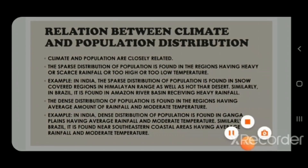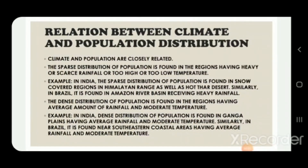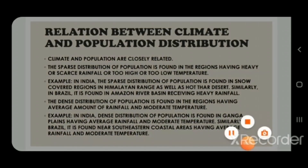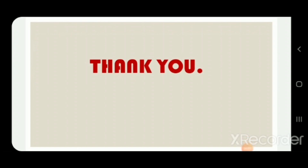When we correlate climate and population distribution, we understand that if the climate is too extreme, the population is very less because not everyone can bear such conditions. Conversely, if climatic conditions are favorable, the population is dense, making it easier for people to live there. With this I would like to end this session. I hope I have made this chapter very clear. Thank you.